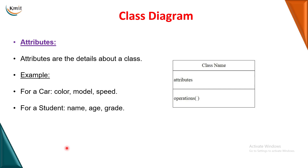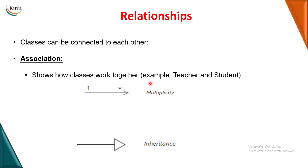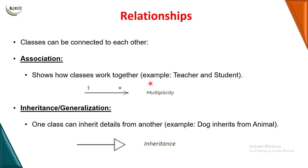Attributes are properties of a class. For example, attributes of a car are color, model, and speed; attributes of a student are name, age, and grade. These attributes are written in the second block of the class. Methods are the operations performed by the class - for a car, it can drive or stop; for a student, they can study or enroll in a course. Methods are written in the third block.